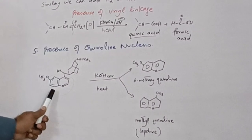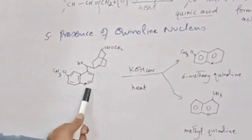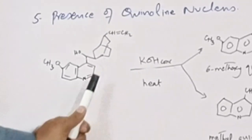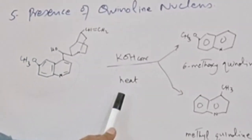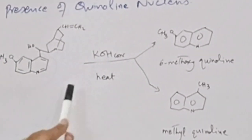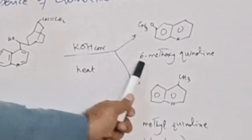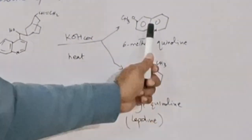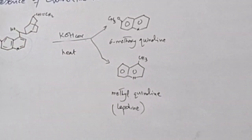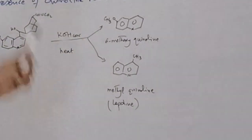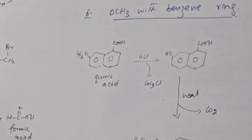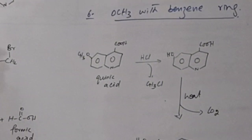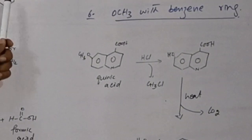Regarding the presence of the quinoline nucleus: this nucleus is called quinoline. To check it, we treat quinine with concentrated potassium hydroxide followed by heat. We get 6-methoxyquinoline and methylquinoline. This shows the presence of a quinoline nucleus in the structure. Whether this methoxy group is attached to the benzene or the pyridine ring of the quinoline can also be determined.